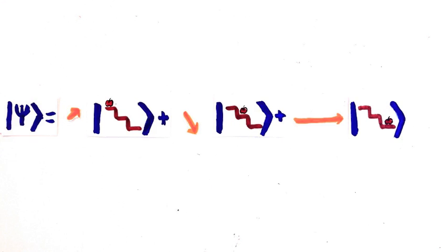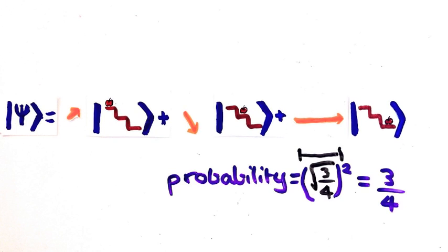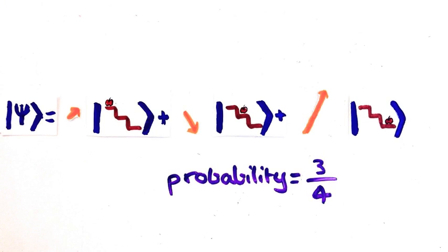Let's look at this example. If you have this coefficient in front of the state, its length is root 3 on 4, and so its probability is 3 on 4. But what if I rotated this arrow so that it's not real anymore? The length is still the same, so the probability stays the same.